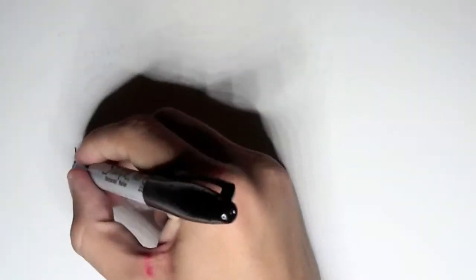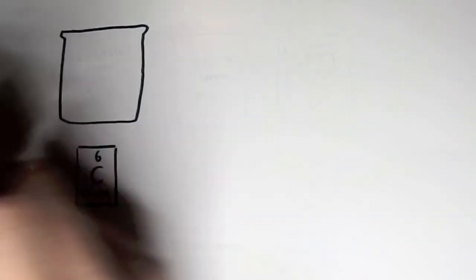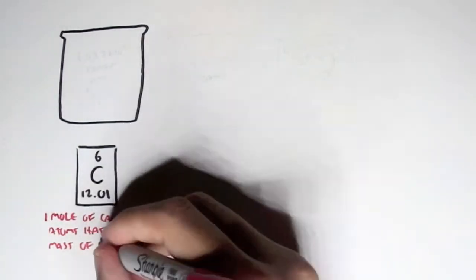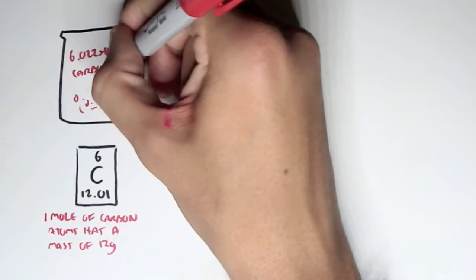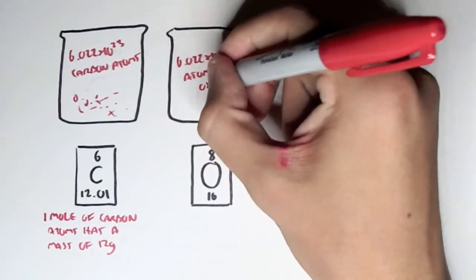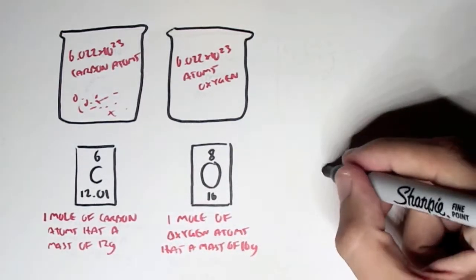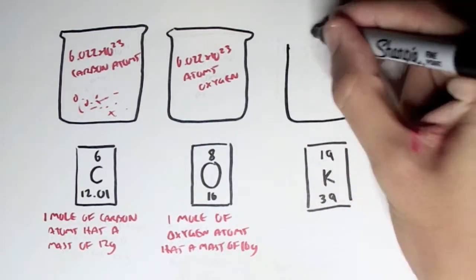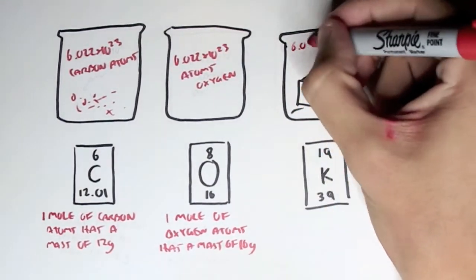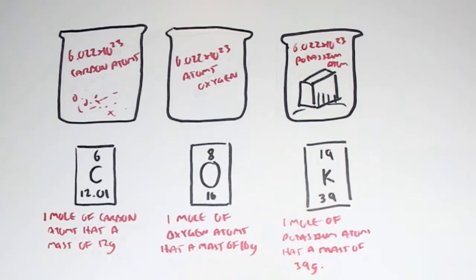A better definition is shown by drawing a picture. Here we have carbon, atomic number 6 and atomic mass unit 12.01 — a mole of carbon atoms has a mass of 12 grams. Similarly, oxygen, atomic number 8 and atomic mass unit 16, a mole of oxygen has a mass of 16 grams. And potassium, atomic number 19, one mole has a mass of 39 grams — the atomic mass unit. This is also known as the molar mass.